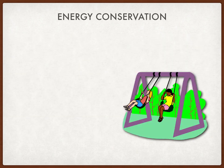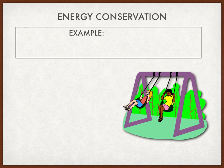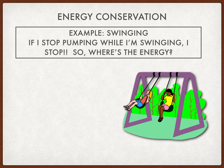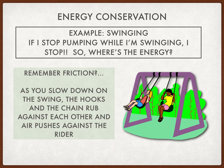Let's say, for example, we have this swinging motion. If I stop pumping while I'm swinging, I will definitely stop. So where's the energy, if it is being conserved? Remember friction? As you slow down on the swing, the hooks and the chain rub against each other, and the air pushes against the rider. So as time passes, the swing will stop.